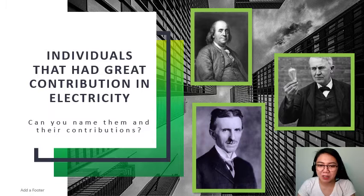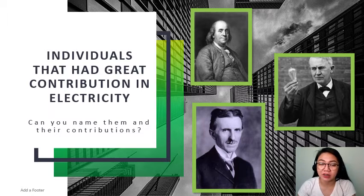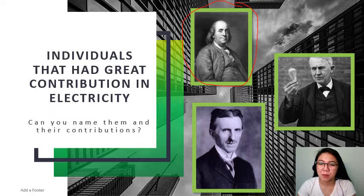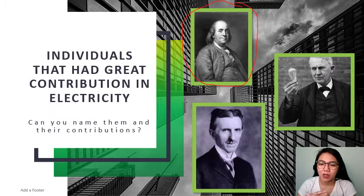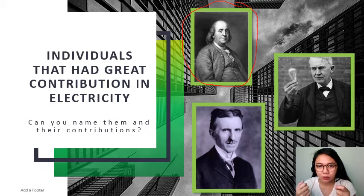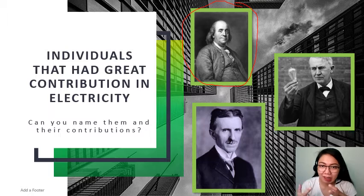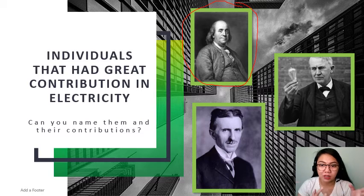Okay, so time's up, and I do hope you have figured out who these people are in the pictures. Let's talk about the first picture — it's Benjamin Franklin. Remember his historical discovery about electricity, wherein he was flying a kite. He conducted a small experiment, and at the end, there was a key on the string, and when lightning struck the kite, that's where he discovered electricity.